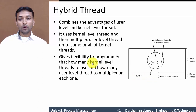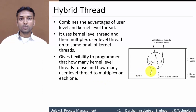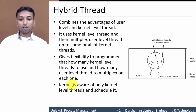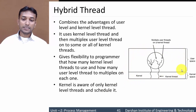Hybrid threads give flexibility to the programmer to decide how many kernel level threads to use and how many user level threads to multiplex — that is, how much of the thread you want to keep in user level space and how much in kernel level space. The kernel is only aware of the kernel level threads and schedules only those kernel level threads.